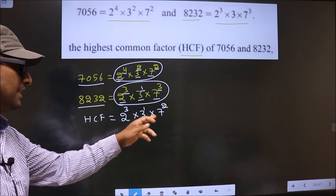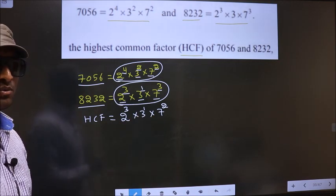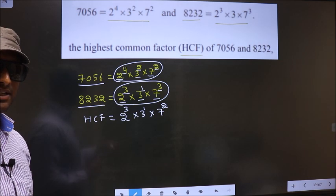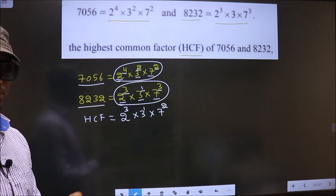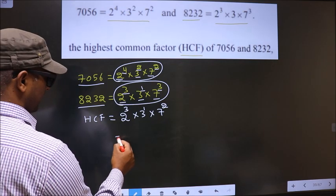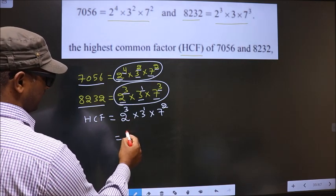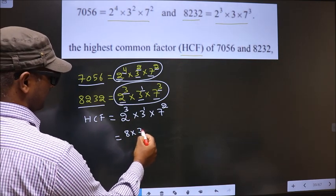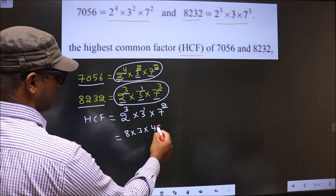Therefore, you multiply these numbers. Whatever number you get, that is your HCF. So let us multiply. That is 2^3 is 8 × 3 × 7^2 is 49.